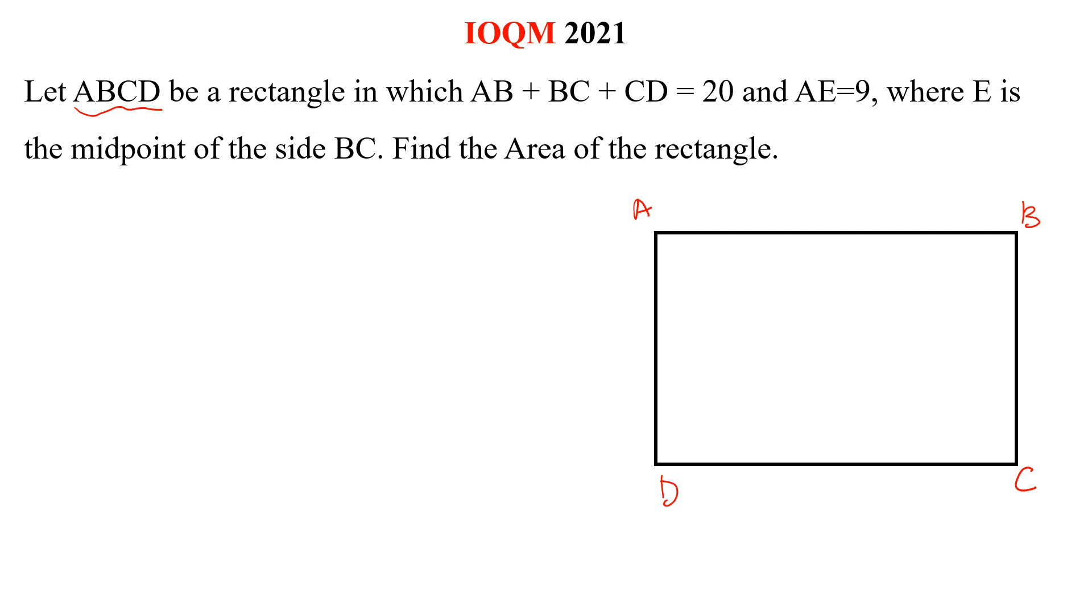In which AB plus BC plus CD is 20. AB plus BC plus CD is 20 and AE is 9, where E is the midpoint of BC. E is the midpoint of BC and AE is 9. Find the area of the rectangle.